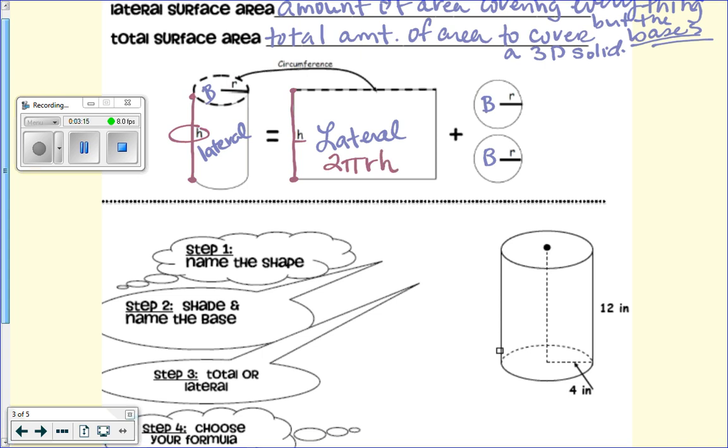Now I want you to look at the circumference formula on your reference material. Which is the circumference formula for a circle? Anybody want to read that one out? C equals 2πr. Good.